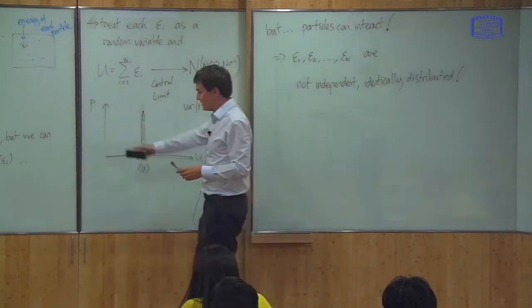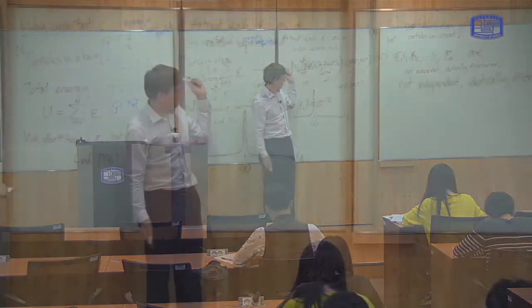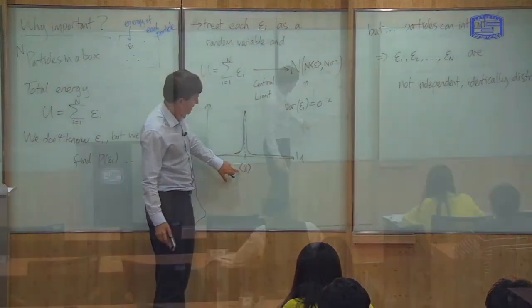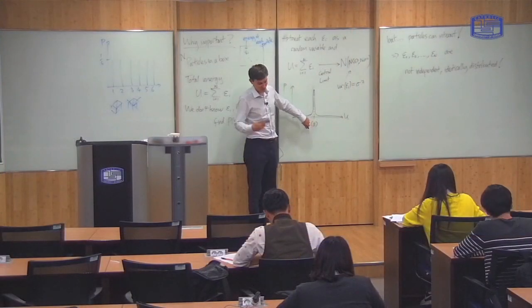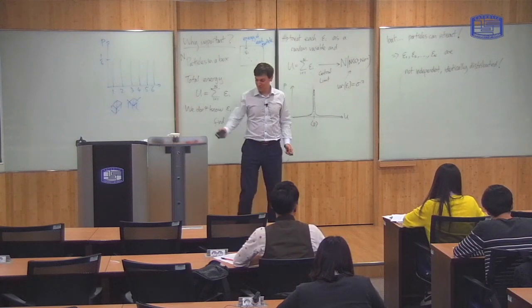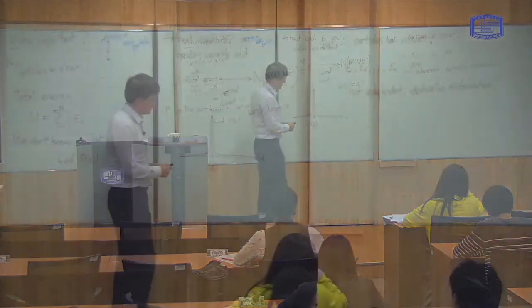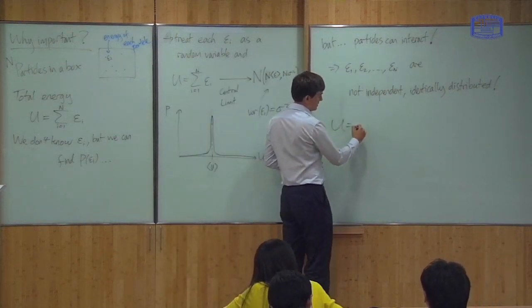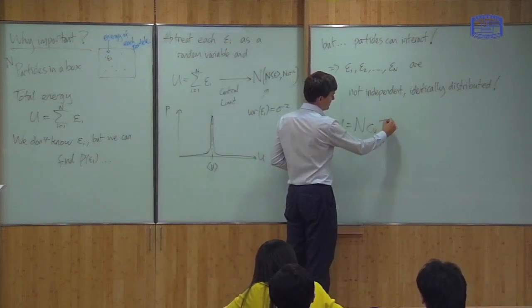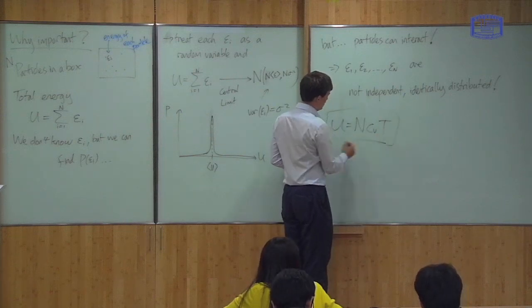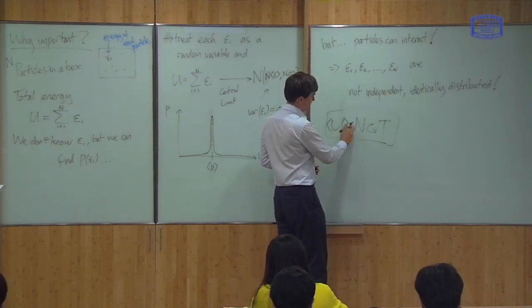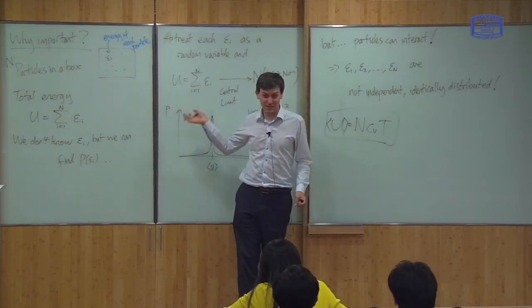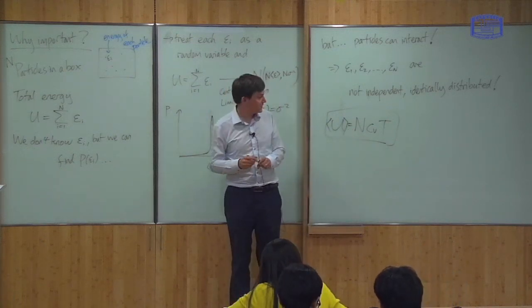There's an issue: the particles can interact. If particles interact, the probability distribution of each particle is not independent, meaning ε_1, ε_2, ε_3 are not independent or identically distributed. But as I showed from the examples, the central limit theorem usually works even for dependent variables with different distributions. This is a preview of what we'll do after the midterm — using these arguments to calculate the energy of a system, and proving results like: the energy of an ideal gas equals N times C_V times T.